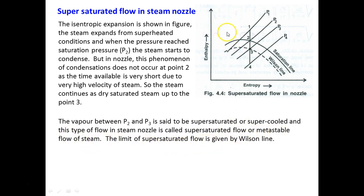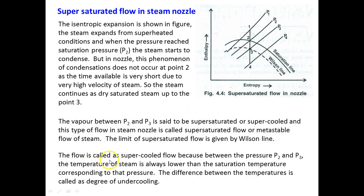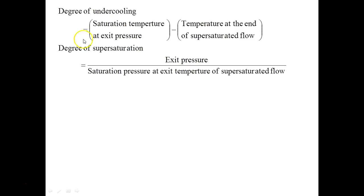The limit of super-saturated flow is given by the Wilson Line. The flow is called super-cooled flow because between pressures P₂ and P₃, the temperature of the steam is always lower than the saturation temperature corresponding to that pressure. The difference between these temperatures is called the degree of undercooling. The degree of supersaturation is defined as the exit pressure divided by the saturation pressure at the exit temperature of the super-saturated flow.